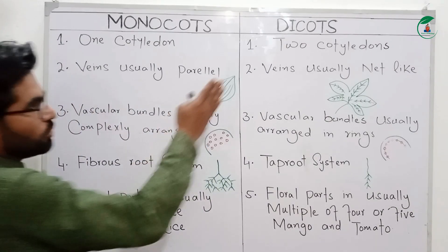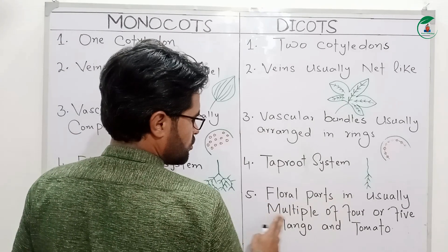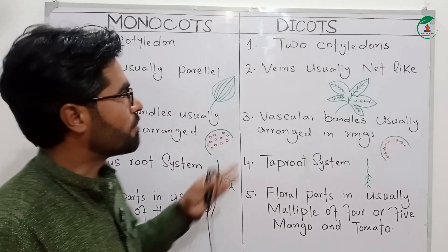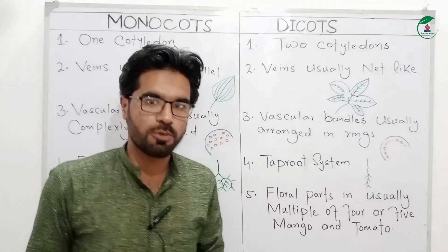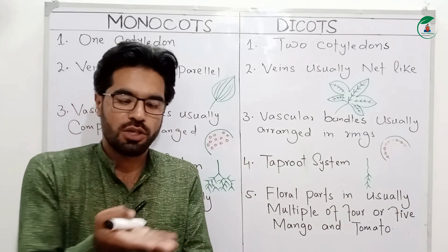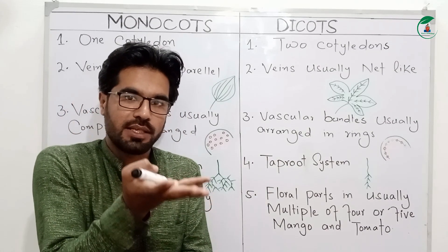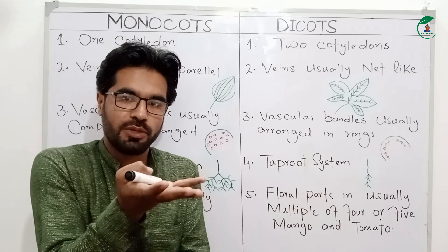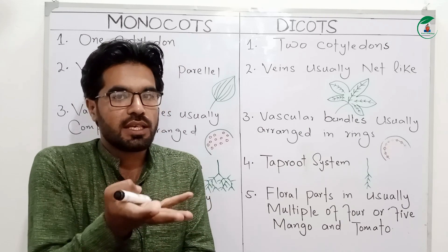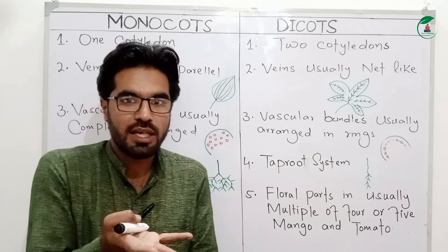The floral part is usually a multiple of four or five. When you get into the dicot flowers, you can identify the flowers from the petal count being multiples of four or five.